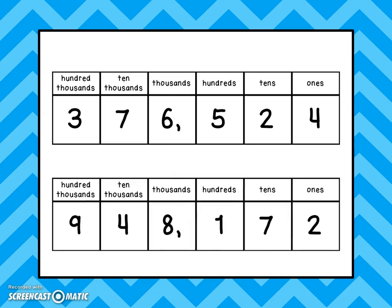Here's another chart for us to look at. This number is nine hundred forty-eight thousand, one hundred seventy-two. We have two in the ones place, or two pieces. We have seven in the tens place — seven groups of tens, so that's seventy. We have one group of hundreds, or one hundred. We have an eight in the thousands place — that's eight groups of one thousand, or eight thousand.